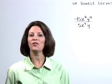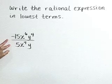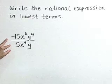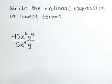Write the rational expression in lowest terms. We have the rational expression negative 15x to the sixth y to the fourth over 5x to the fourth y.